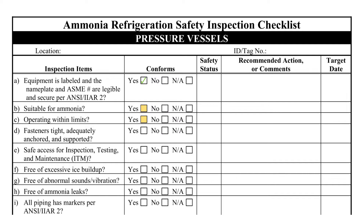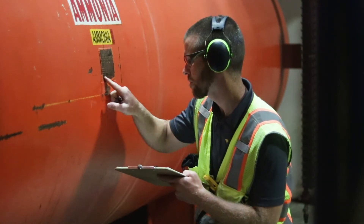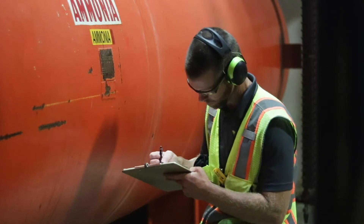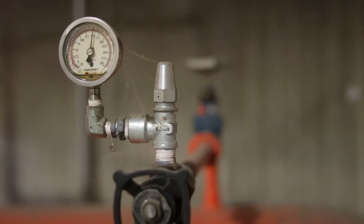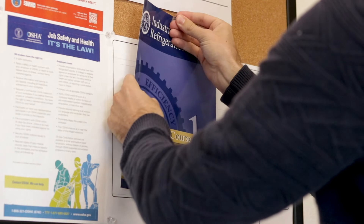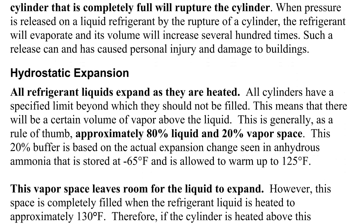Items B and C ask if the vessel is suitable for ammonia and operating within limits. The inspector must verify that the vessel is ASME stamped and not constructed of materials such as copper that would degrade if exposed to ammonia. The two primary operating limits of concern are pressure and liquid level. The pressure should be at least 10% lower than the relief valve set pressure. The liquid level must have adequate vapor space to accommodate liquid expansion if the vessel experiences an unexpected heat load. As a good practice, Read of Book 1 recommends limiting the liquid level to no more than 80%, leaving 20% of the vessel volume as room for expansion.